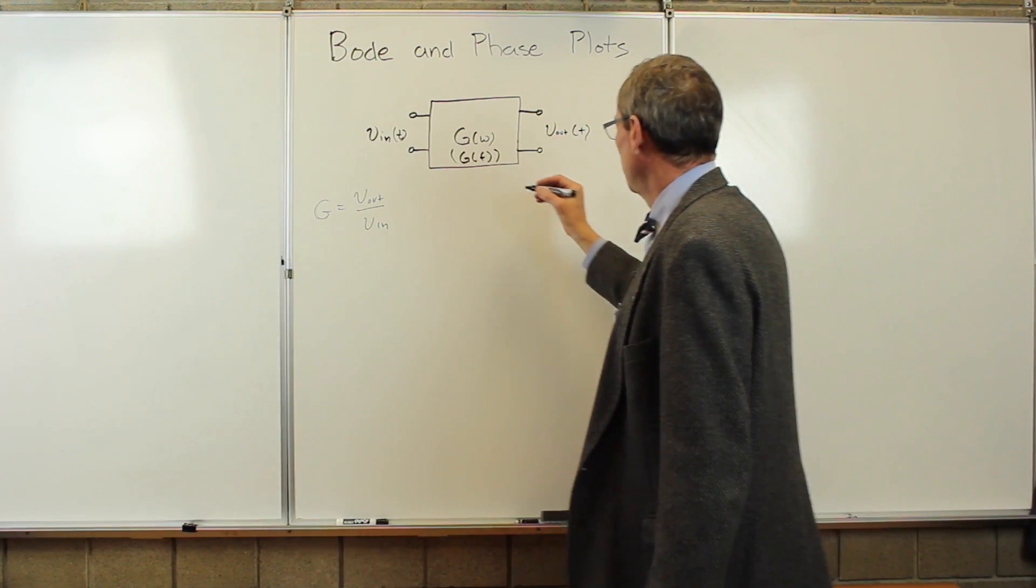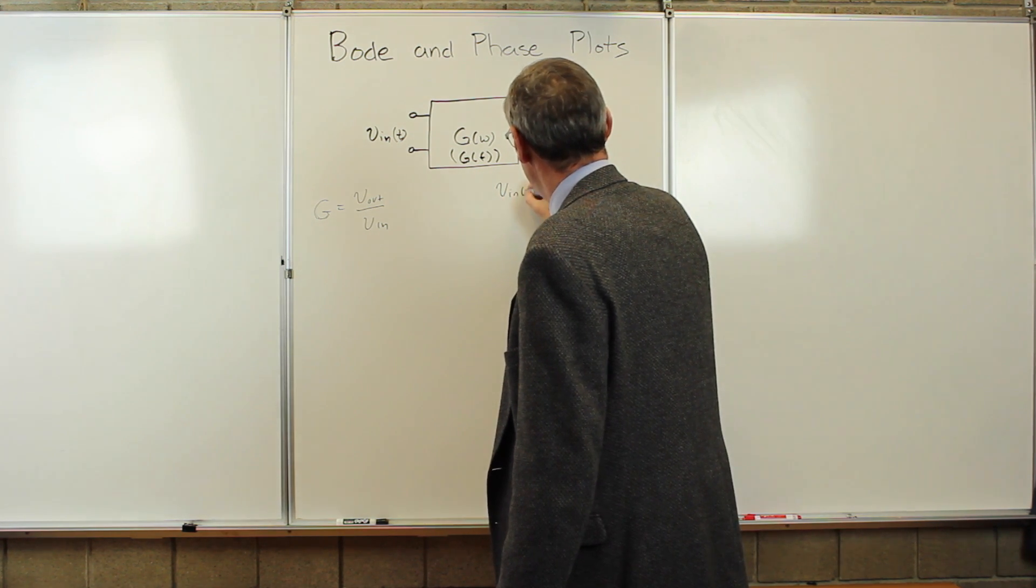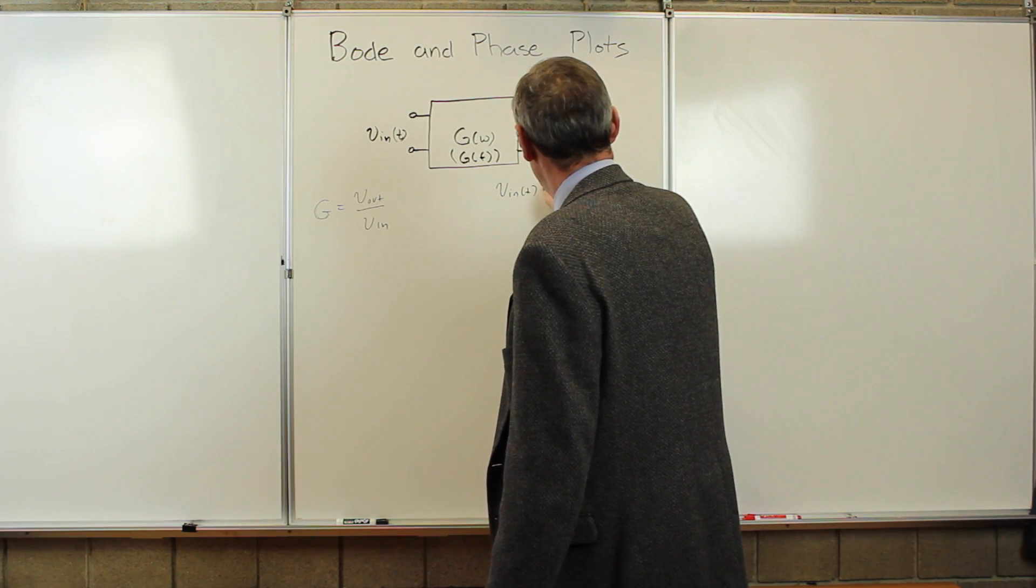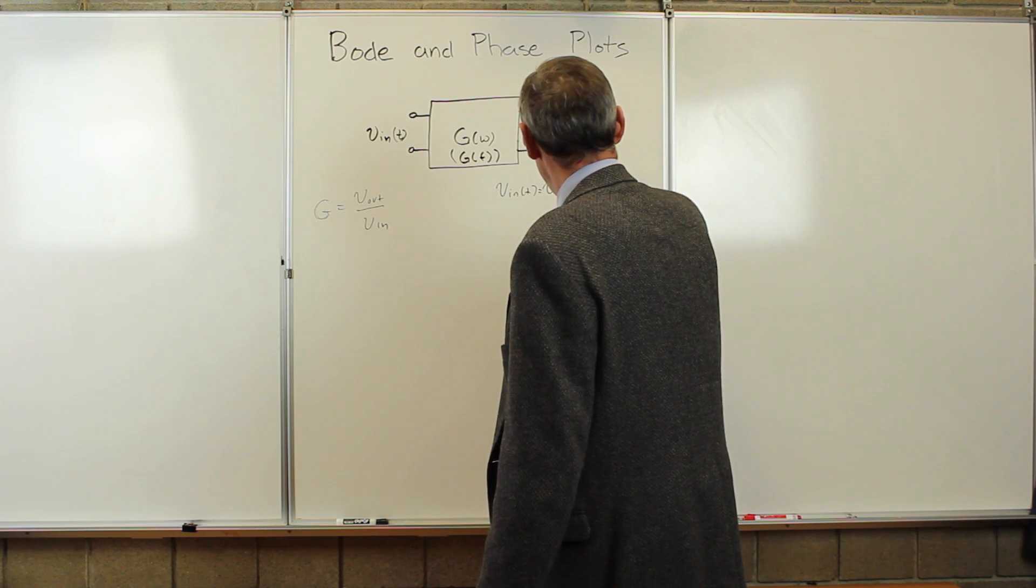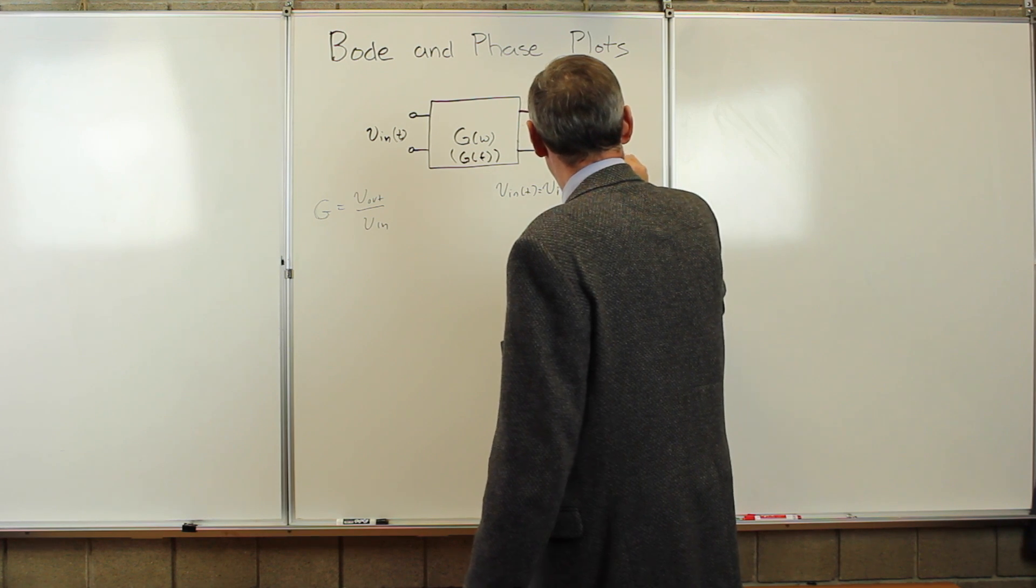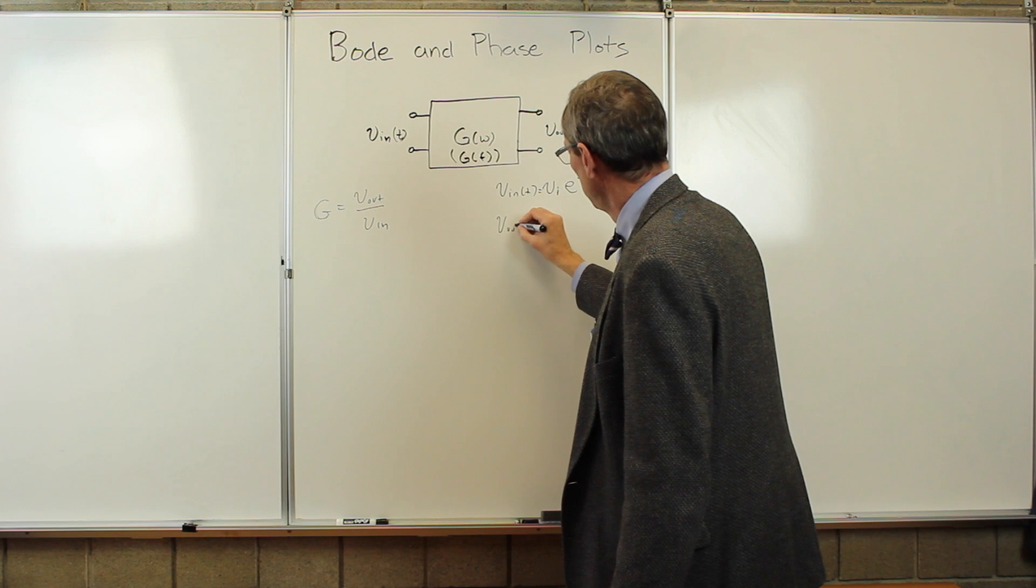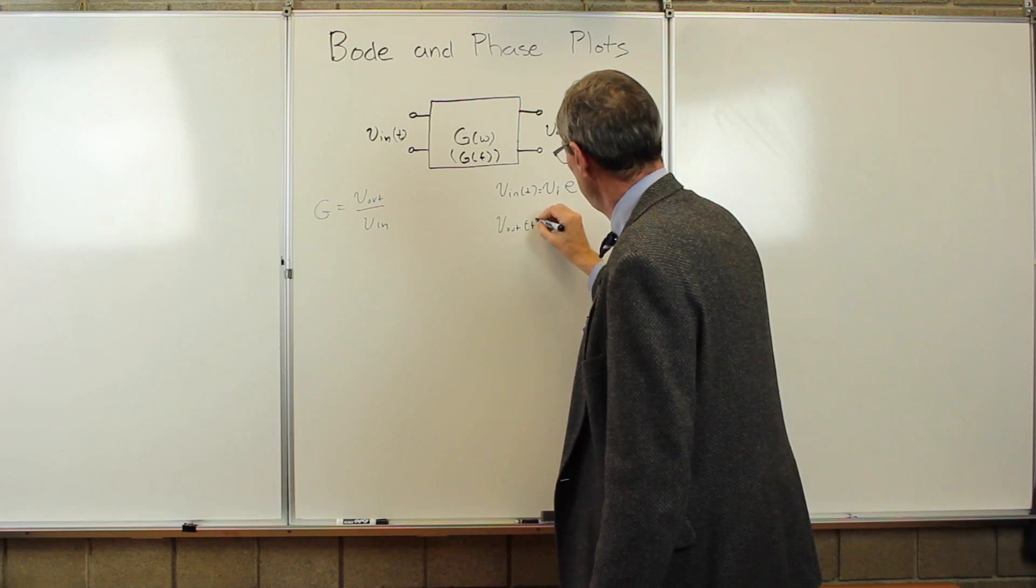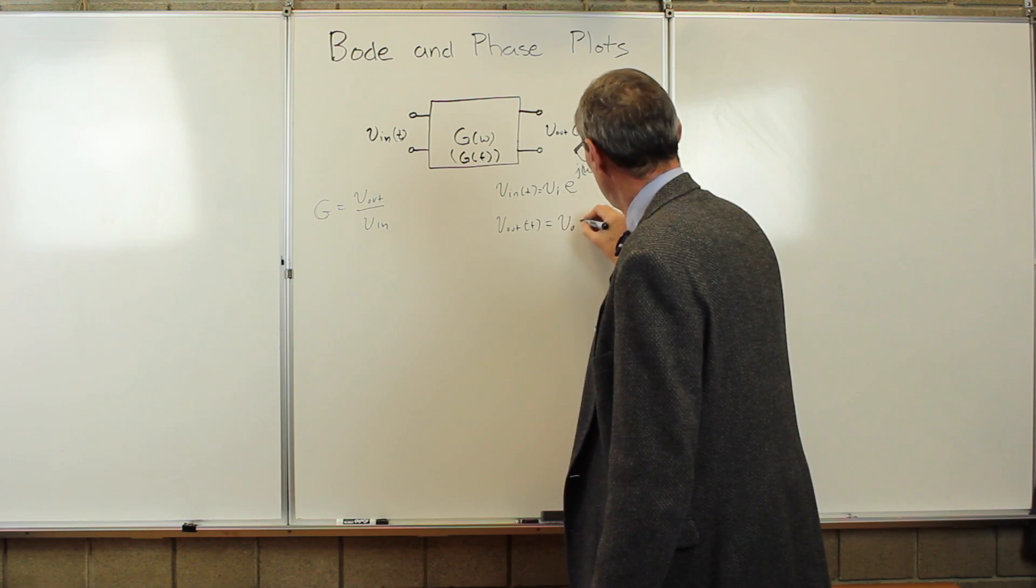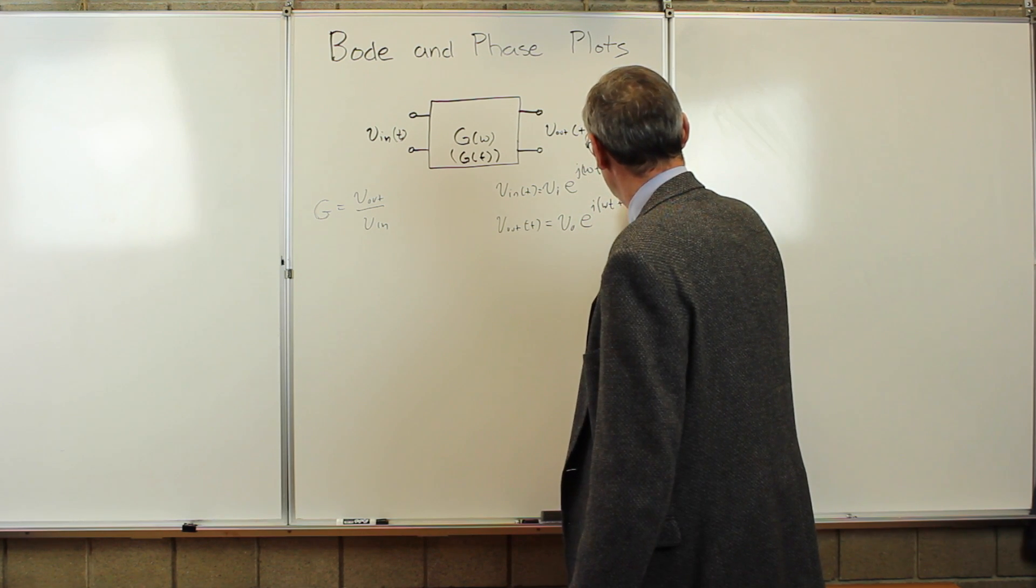Let's start by simply writing these in exponential form. So V_in of t equals V_i e to the j omega t plus phi_in, and V_out of t equals V_o e to the j omega t plus phi_o.